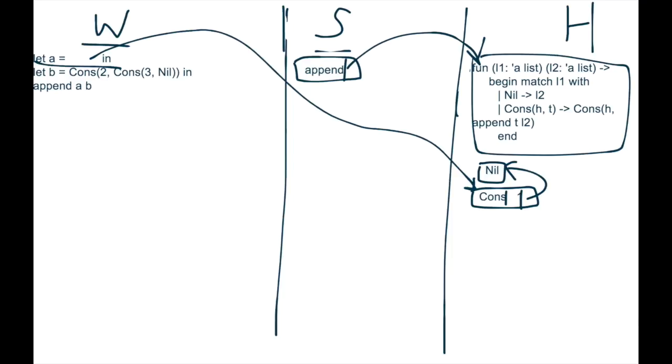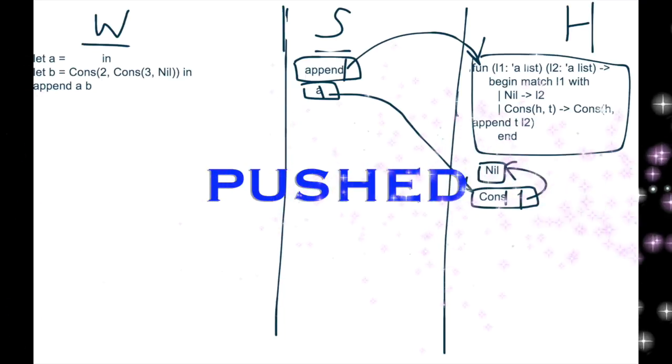And now this let declaration for a is going to be ready, because whatever is to the right of the equal sign is now a value. So let's make this binding on the stack. That's pointing to its value on the heap. Clean that up a little bit. And now that it's been pushed to the stack, we can remove it from the workspace.